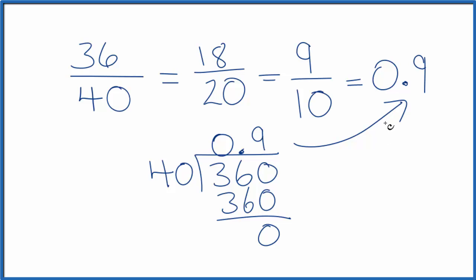If we wanted to check our work here, we could take 0.9, our answer, and multiply it by the denominator here. When we do that, we'll end up with 36, the same value as the numerator. And that would also work on these fractions here as well.